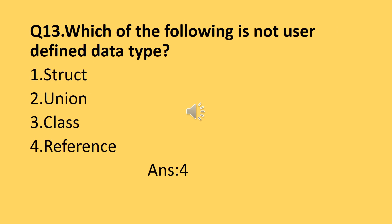Question number thirteen: which of the following is not a user-defined data type? Structure, union, enumeration, and class are user-defined data types. Reference is not a user-defined data type. So the answer is reference.